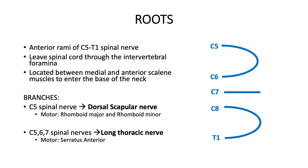In the neck, these roots lie between the medial and anterior scalene muscles. At this level there are two branches. From the C5 spinal nerve there is a dorsal scapular nerve branch, which goes to supply the rhomboid major and rhomboid minor. The other branch comes from the C5, C6, C7 spinal nerves, forming the long thoracic nerve, which goes to supply serratus anterior. These are pure motor nerves.